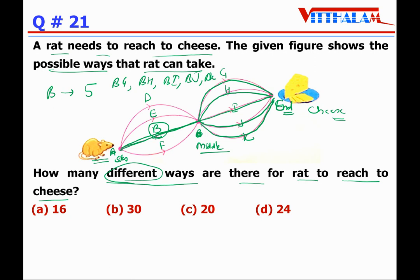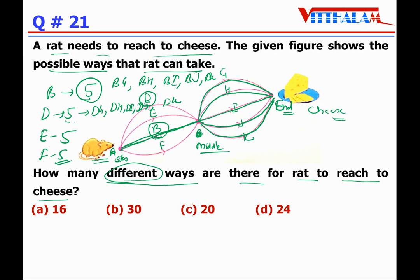That means the total number of ways is five plus five plus five plus five, which equals twenty. So the answer is C — twenty different ways.